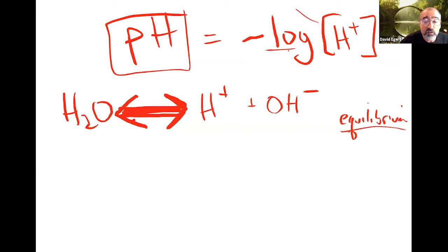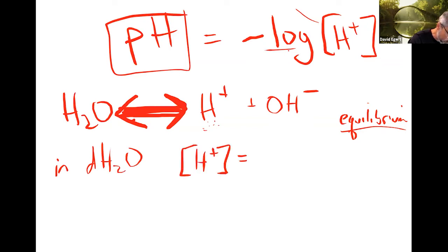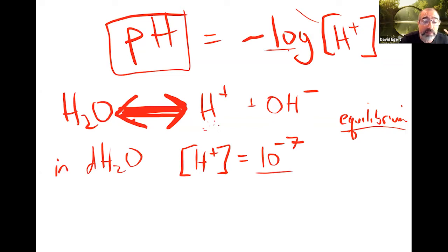In just distilled water, very few H pluses exist as free H pluses at any moment. Most of it is just water molecules. In distilled water, the concentration of H+ is about 10 to the minus seventh — that's one ten-millionth — a very small level.